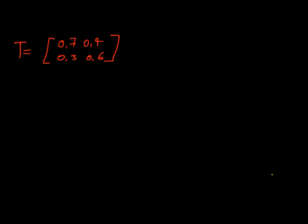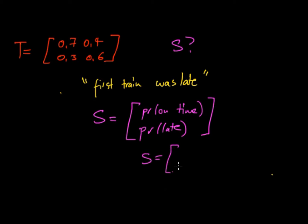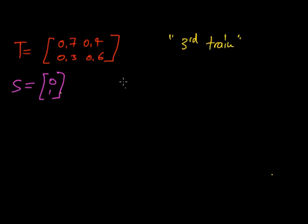Now that we have the transition matrix, we work out the initial condition. It says the first train was late, so S refers to the probability vector with on-time as the top entry and late as the bottom. Since the first train is 100% late, S₀ is equal to the column vector [0, 1].